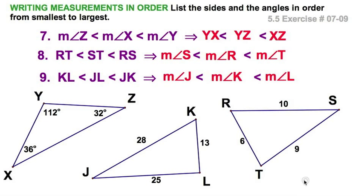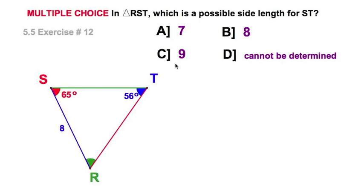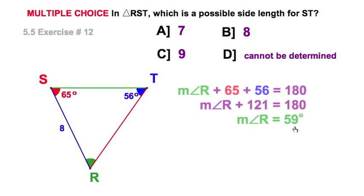In keeping with our 7-8-9 theme, we have to decide what is a feasible length for this green segment. You might be tempted, but look more carefully. We have two angle measures, and the third angle theorem tells us we can find the third.